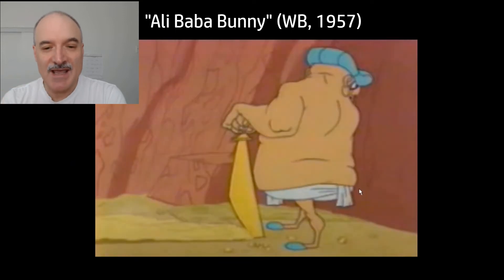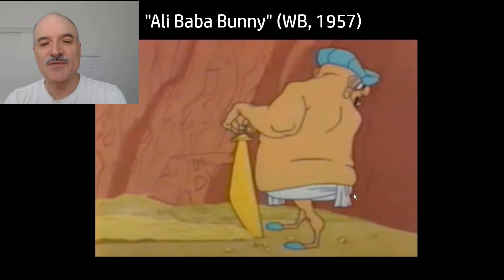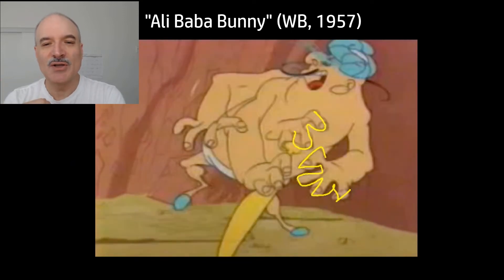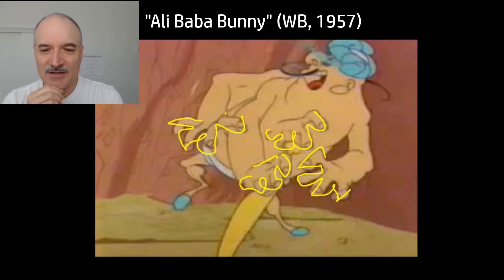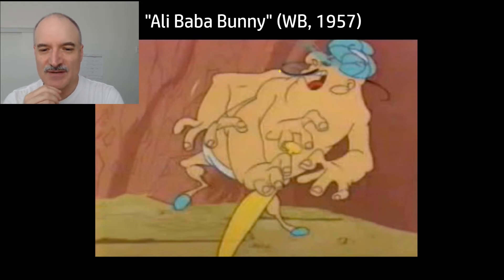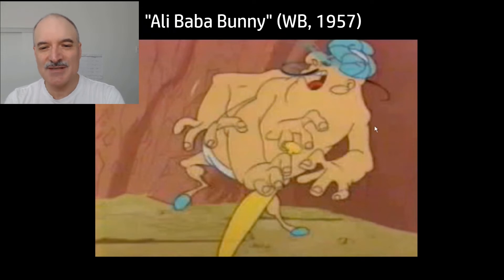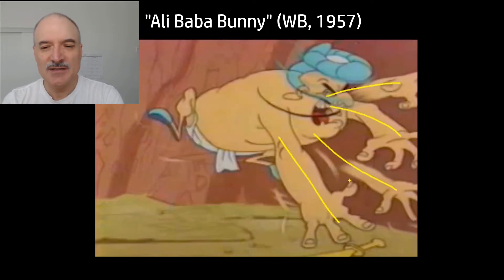When it comes to animation, we can go much further than that, of course. We can draw multiple hands, like in Alibaba Bunny here — 1957 Warner Brothers — multiple arms. You can see even this fourth arm here; it doesn't even need an arm. It's just the hand suggesting the foreshortened arm.